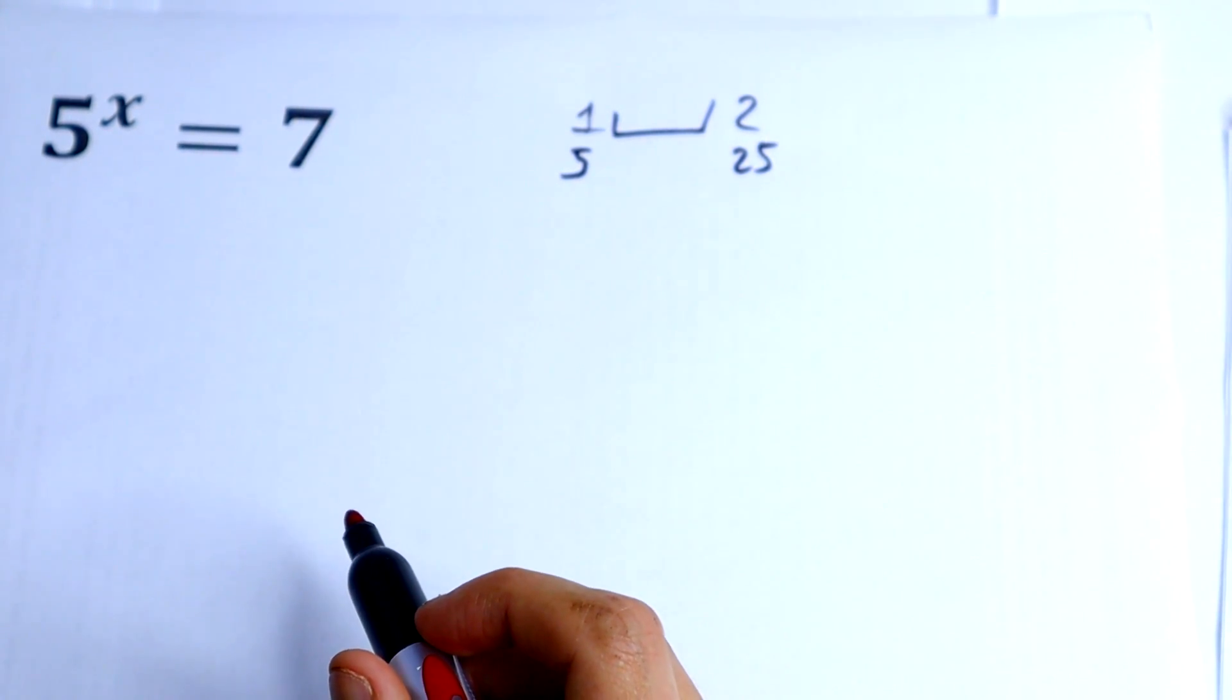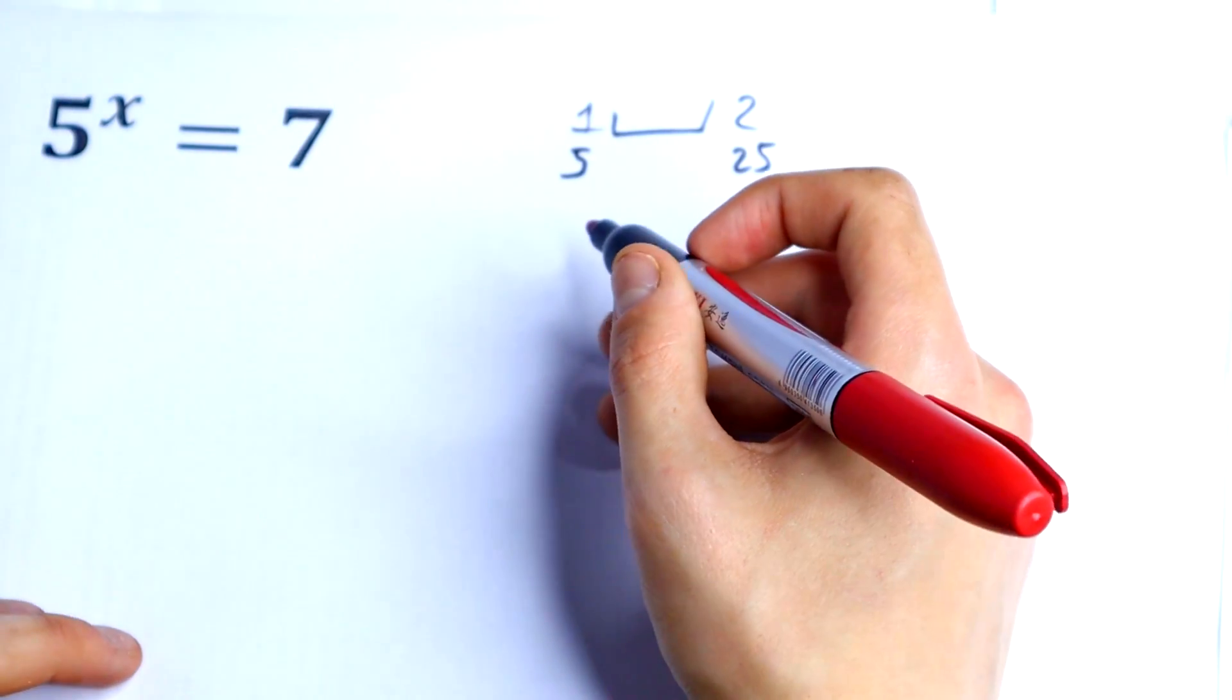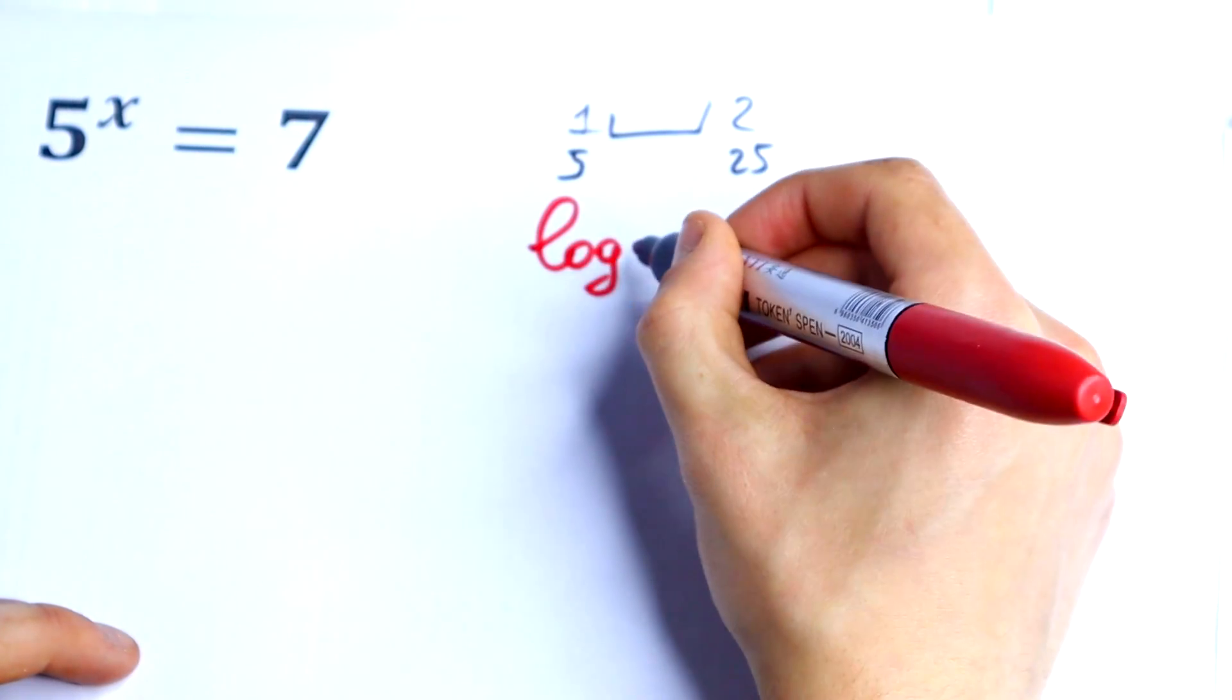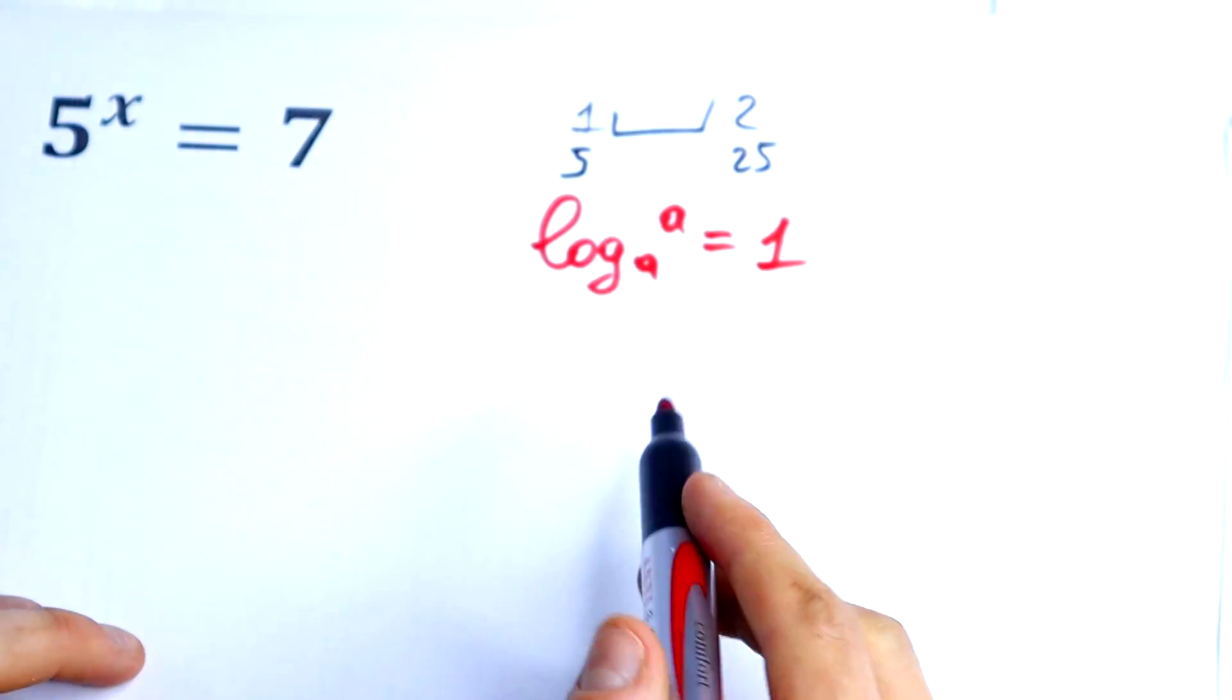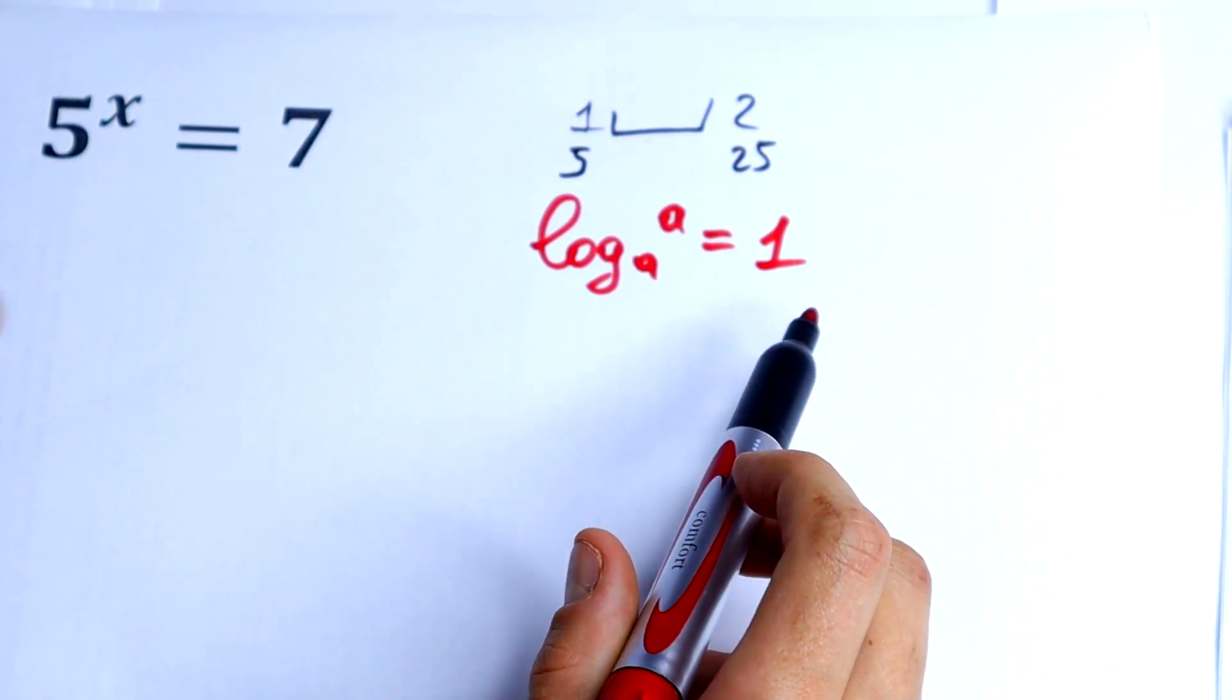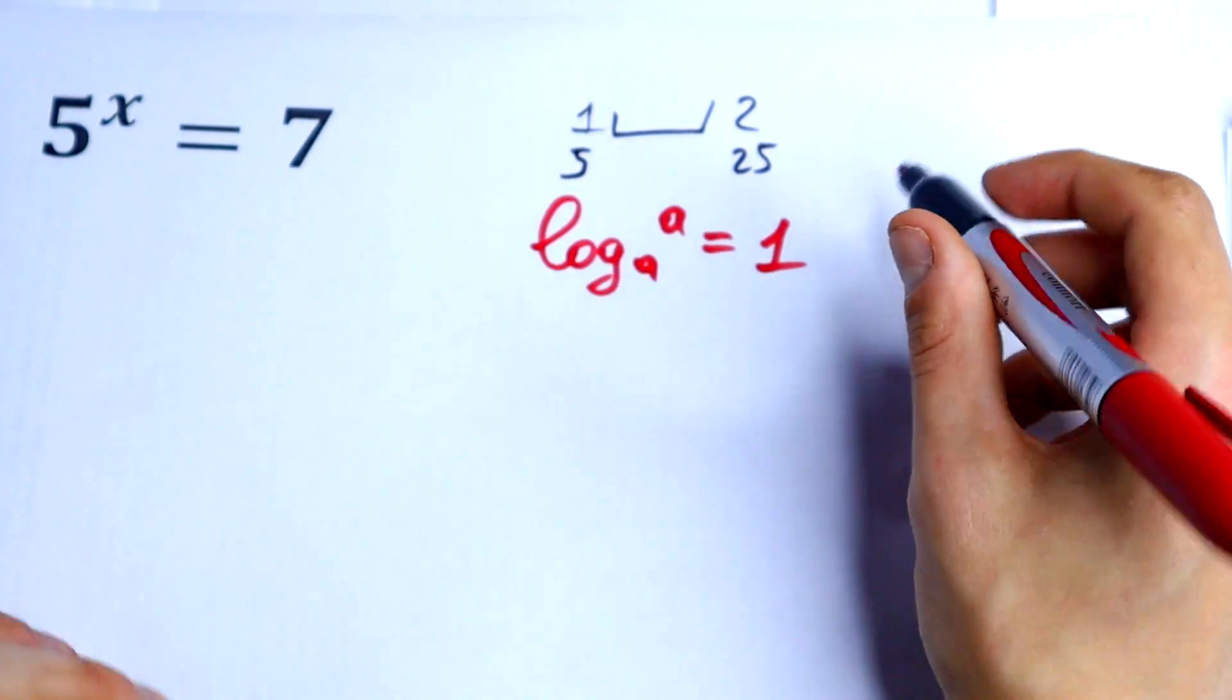First rule we need: log base a of a equals 1. If we have the same base and the same number, it equals 1.